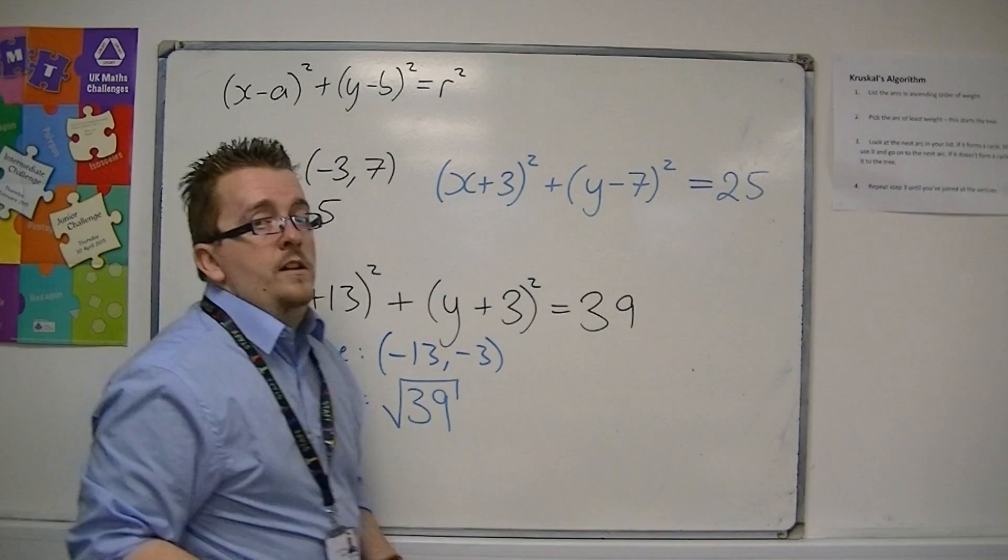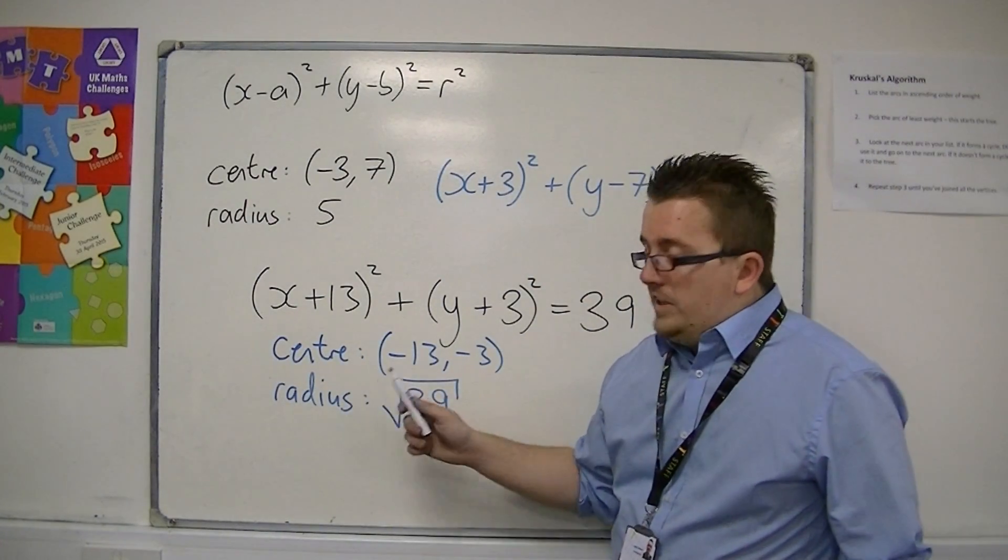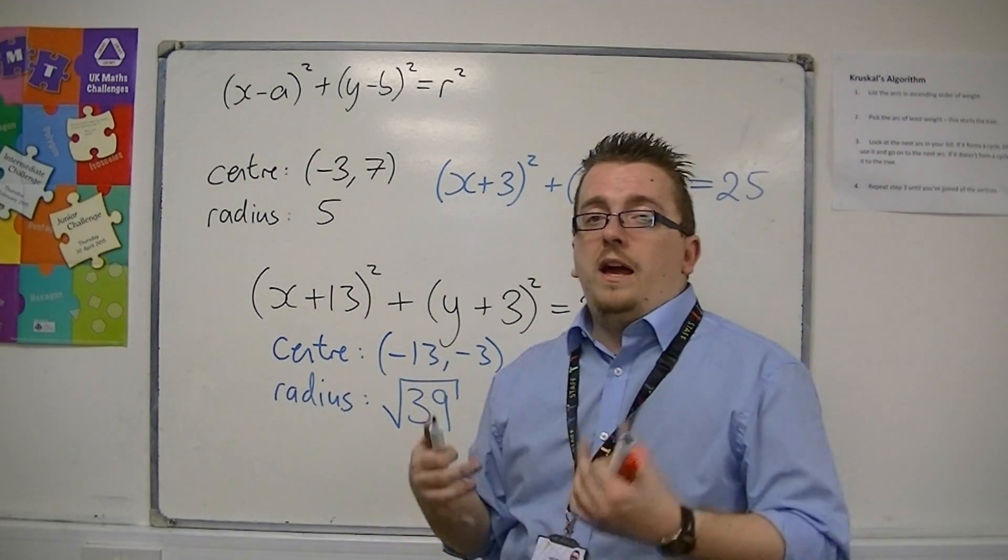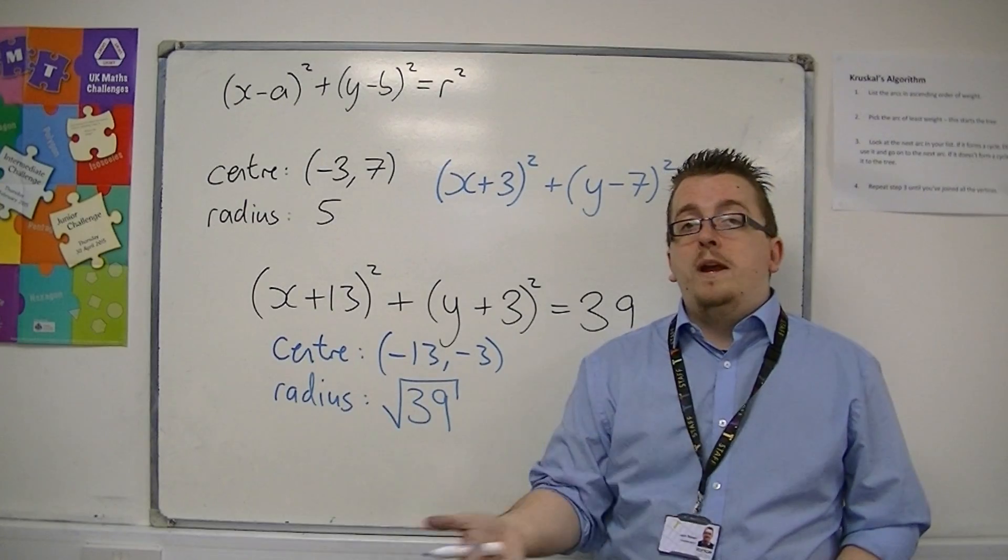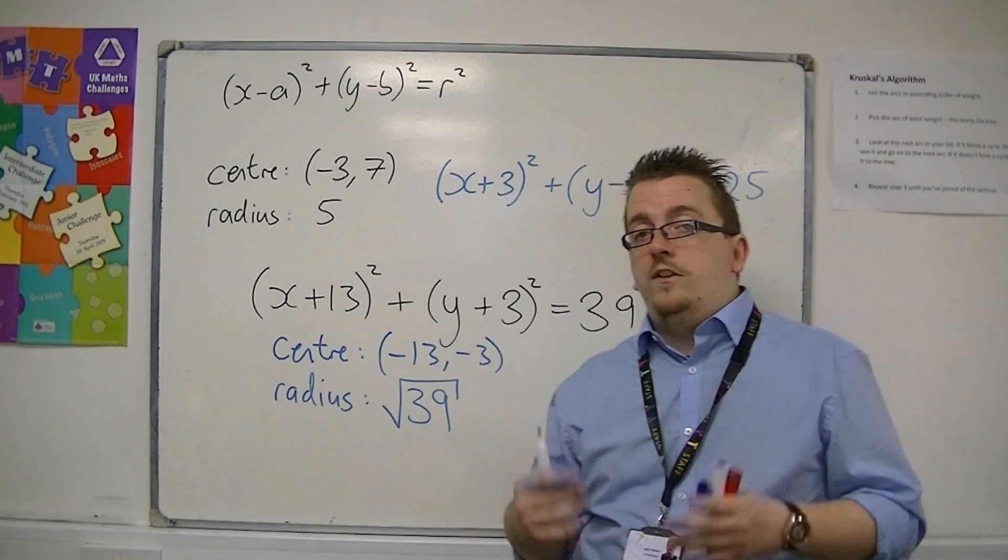Notice also that we don't put ±√39 because you can't have a negative radius. The radius is a length, and therefore it cannot be negative.